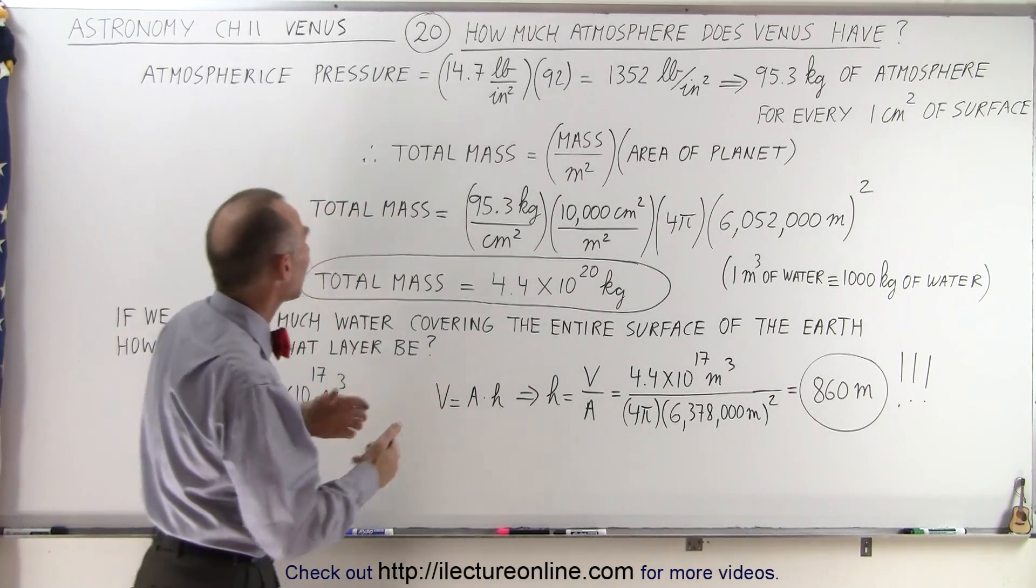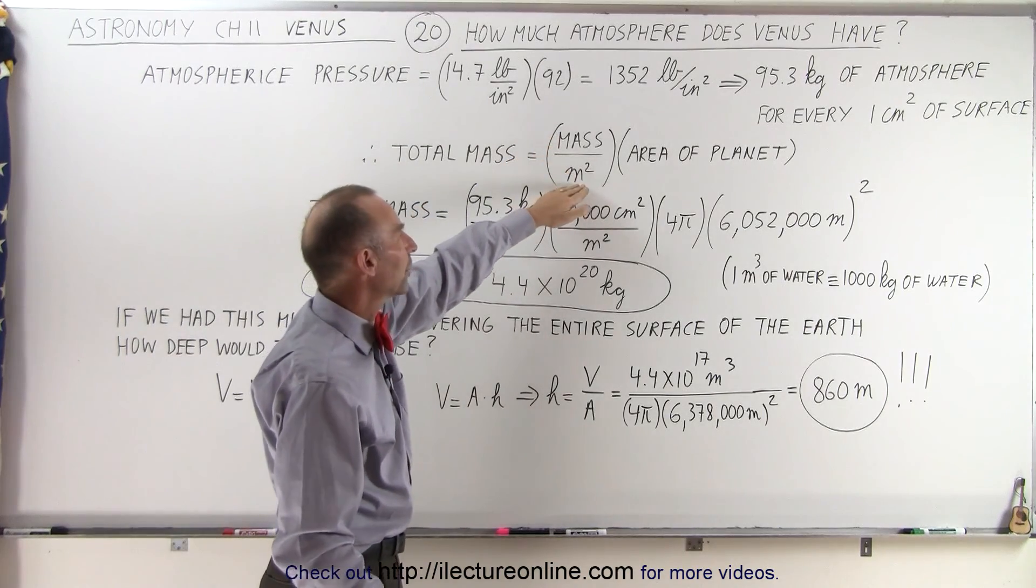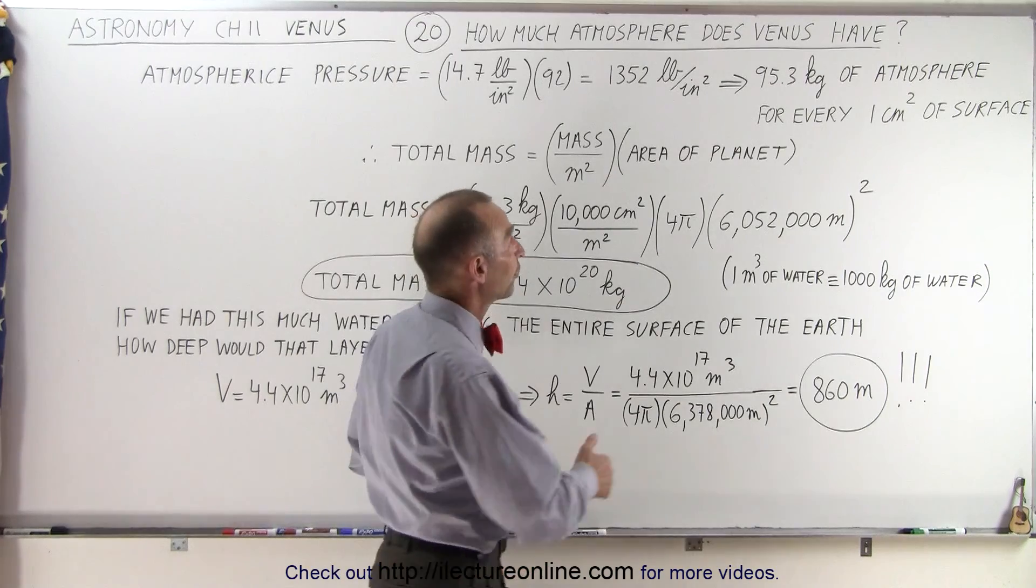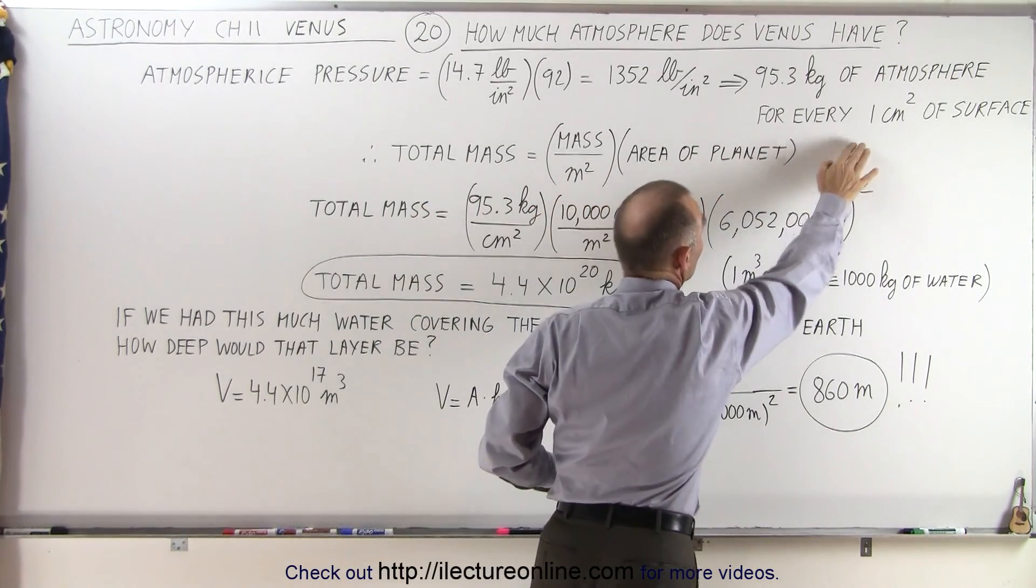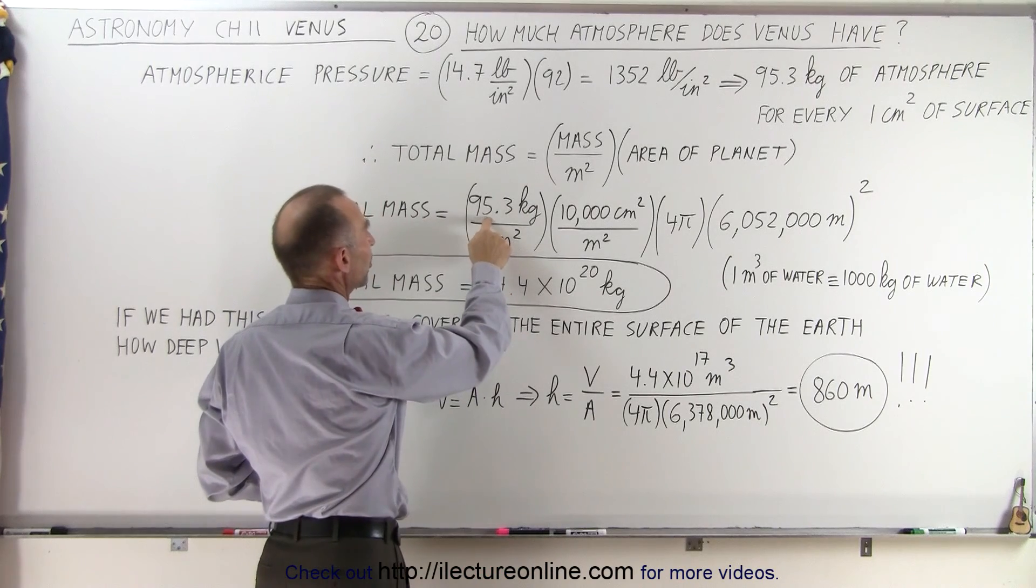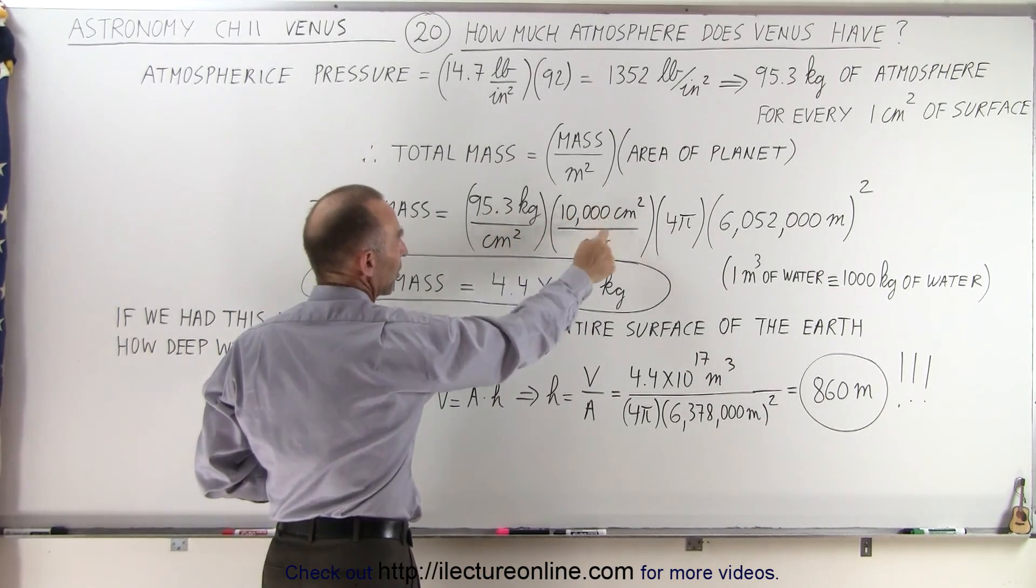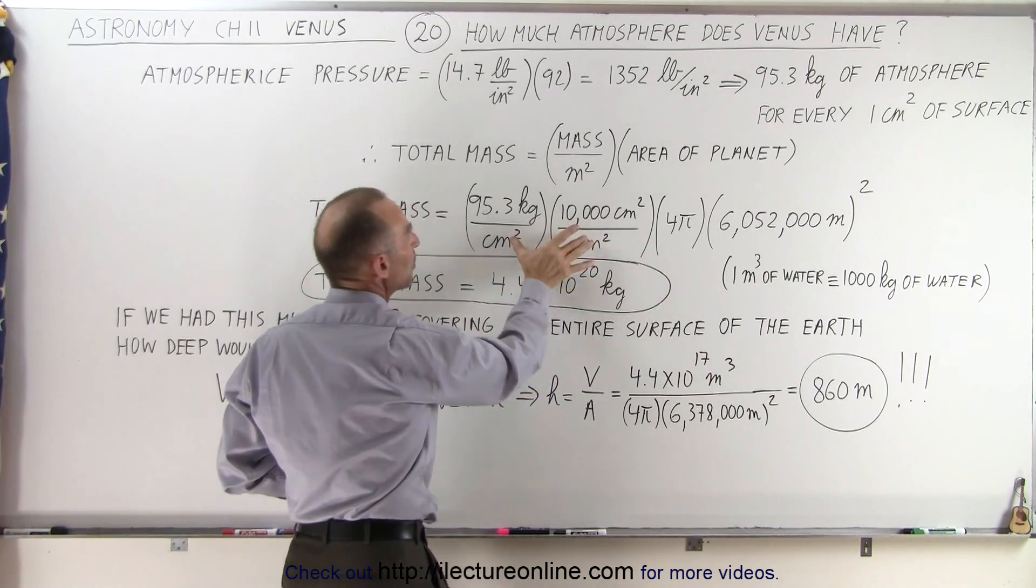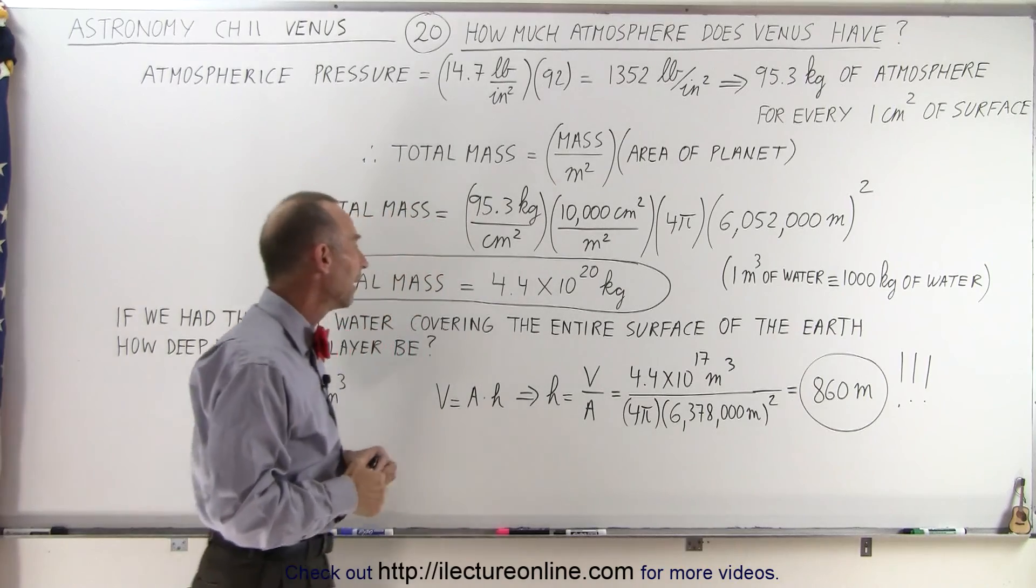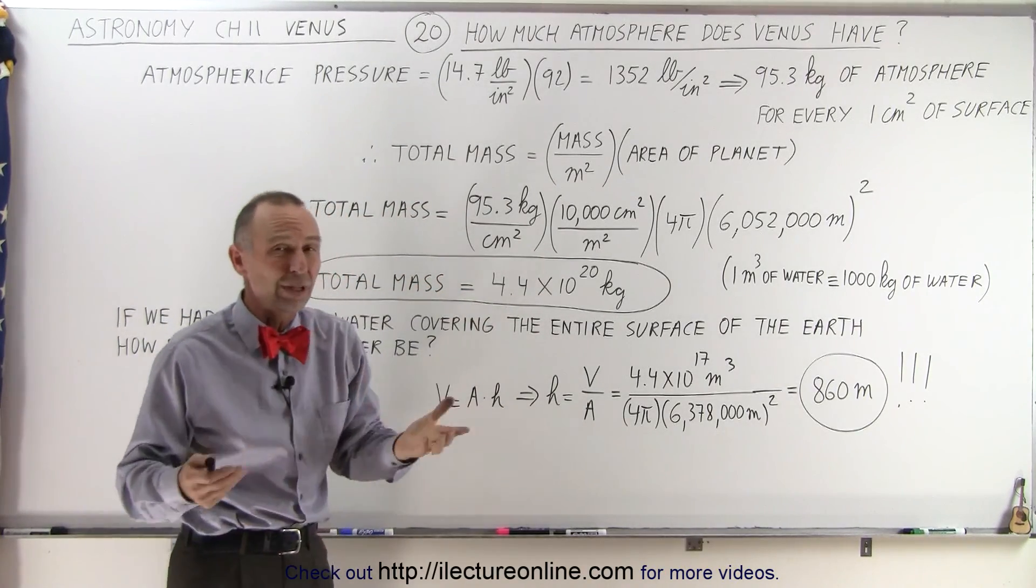Now we can use that to find the total mass. We take the mass per unit area and multiply it times the area of the planet. So we have to convert the mass per square centimeter to the mass per square meter. So we do that here: 95.3 kilograms per square centimeter, there's 10,000 square centimeters in a square meter, and then we multiply times the area of the planet, 4πr², and we get a total mass of 4.4 × 10²⁰ kilograms.